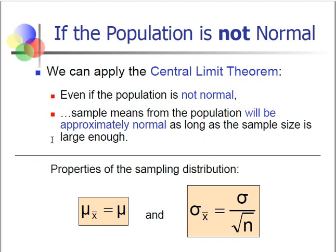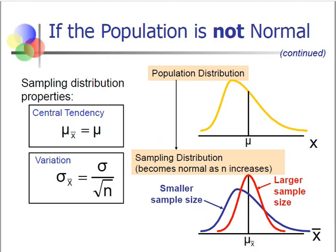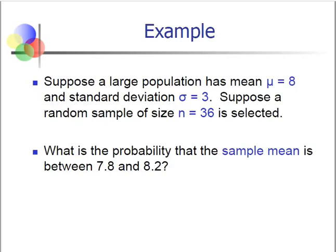Large enough means the sample size should be at least 30. Let's look at an example. Suppose a large population has a mean of 8 and a standard deviation of 3. Suppose a random sample of size 36 is selected — what is the probability that the sample mean is between 7.8 and 8.2?